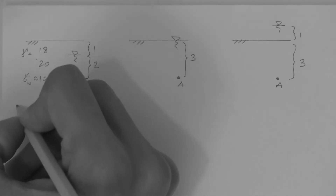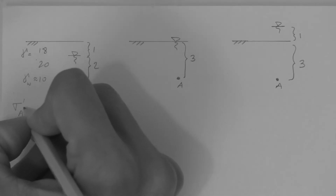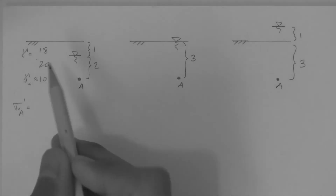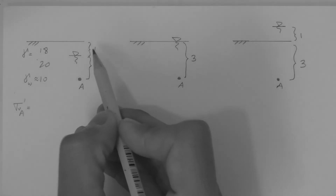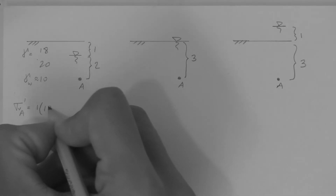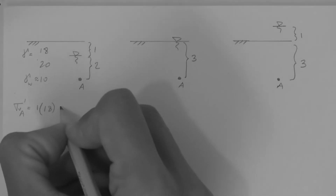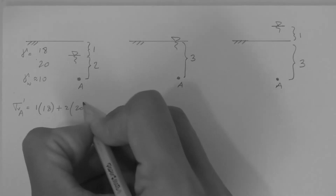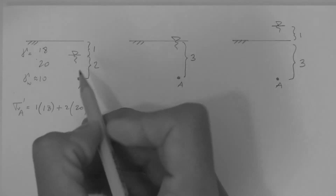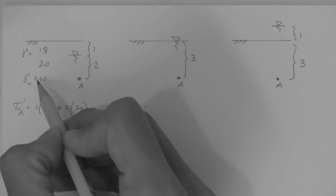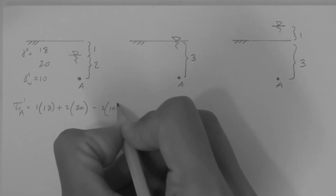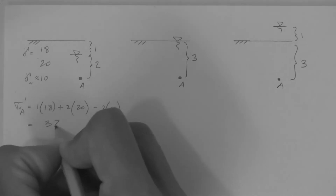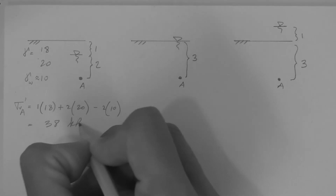The vertical effective stress at point A for the first profile is as follows: one meter of dry soil plus two meters of saturated soil minus two meters of water. This is equal to 38 kPa.